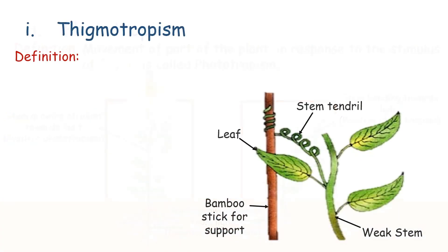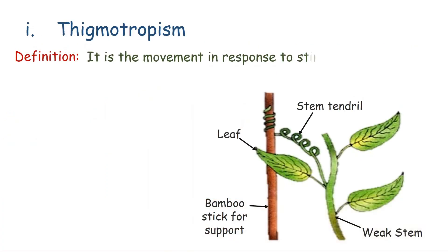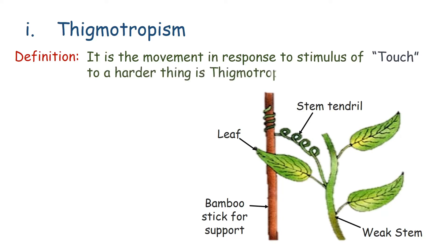Movement in response to the stimulus of touch to a harder thing is thigmotropism. Climbing vines when come in contact with some solid object, the growth on the opposite side of contact boosts and the tendril coils around the support.